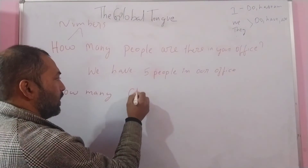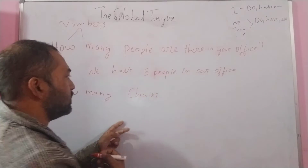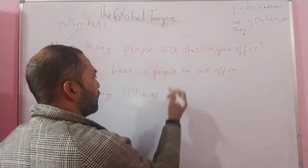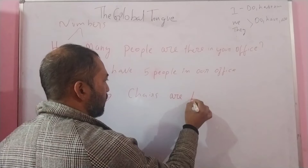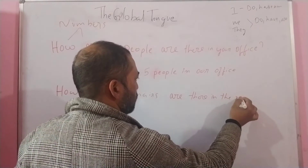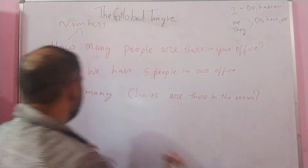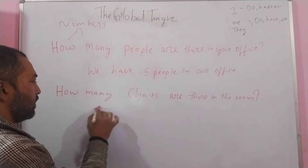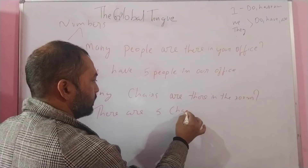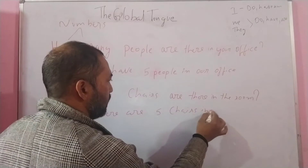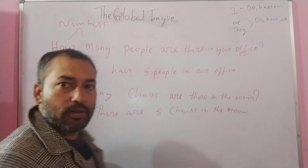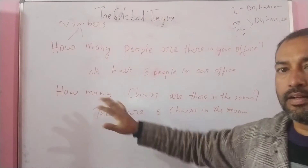Let's say, instead of 'people,' let's use 'chairs.' How many chairs? Chairs — it's plural. So 'how many chairs' — after that we use 'are.' How many chairs are there in the room? And we can say: 'There are five chairs in the room.'